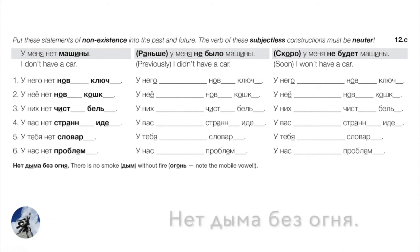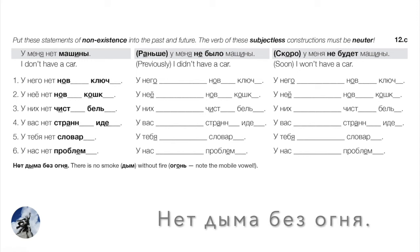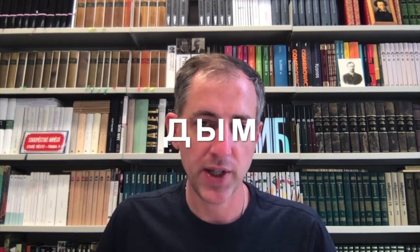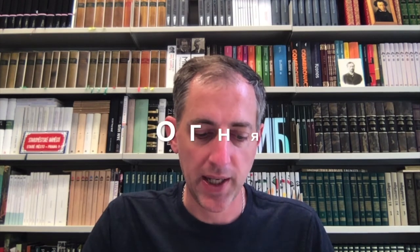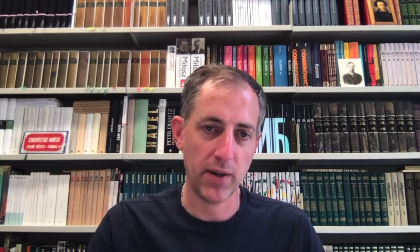Quick пословица — Russian folk saying: Нет дыма без огня — just like the English 'where there's smoke, there's fire.' In Russian: there is no smoke without fire. Дым means smoke, so нет дыма means there is no smoke. The second half is a prepositional phrase. Огонь means fire; it has a mobile vowel, so the genitive with без gives us огня. Нет дыма без огня — there's no smoke without fire.